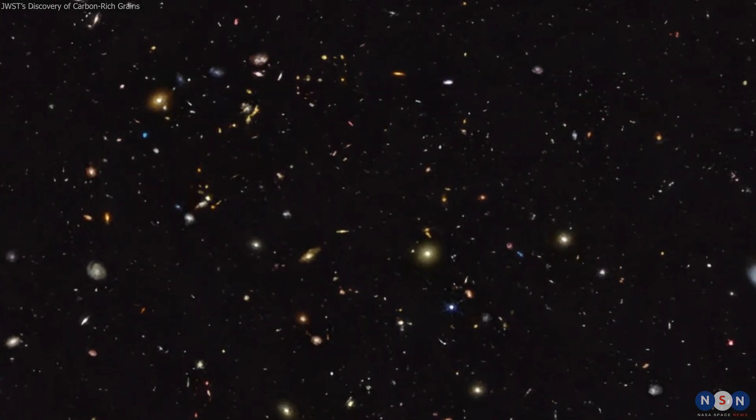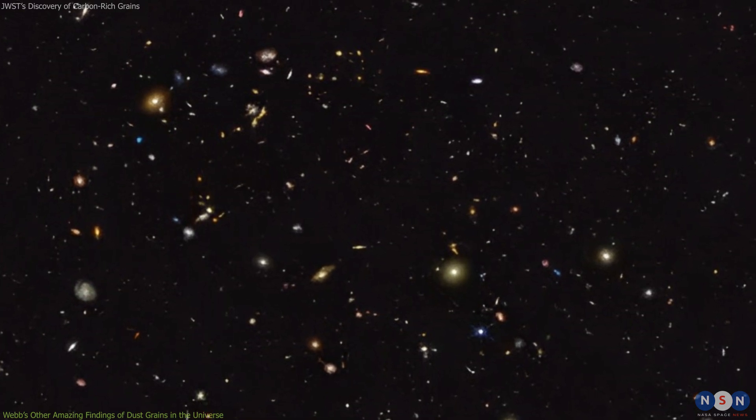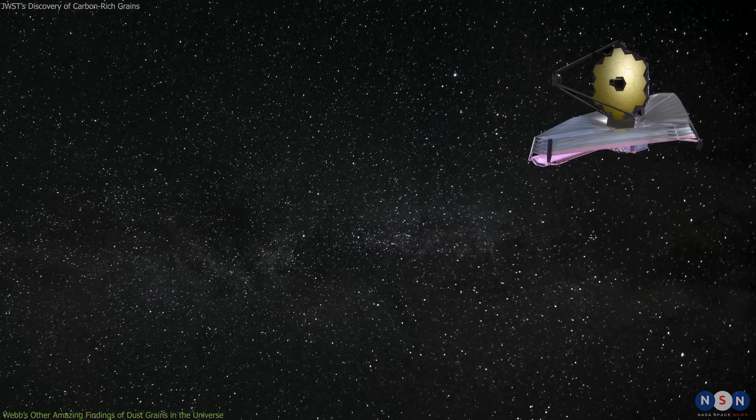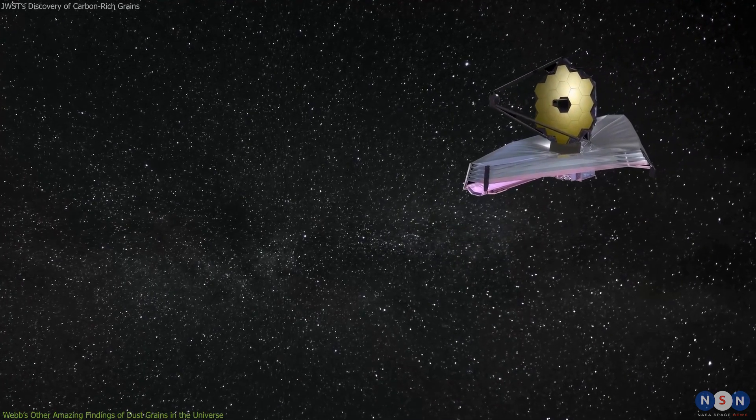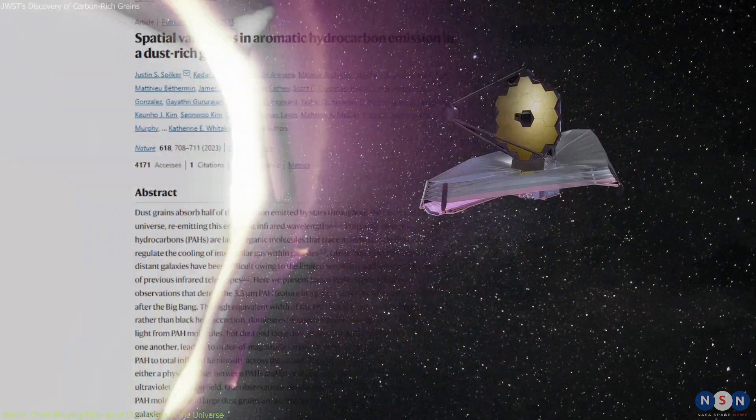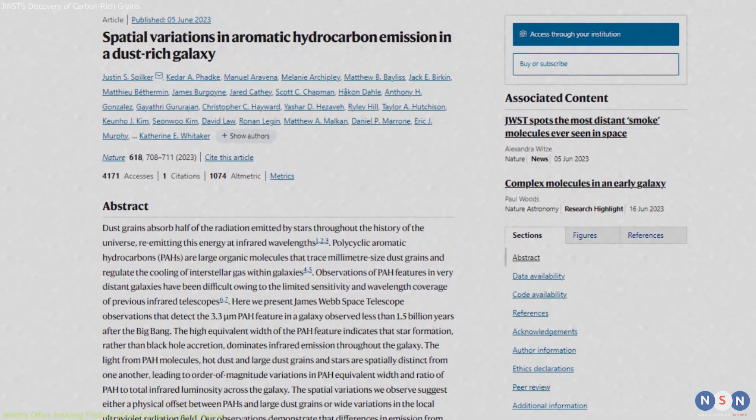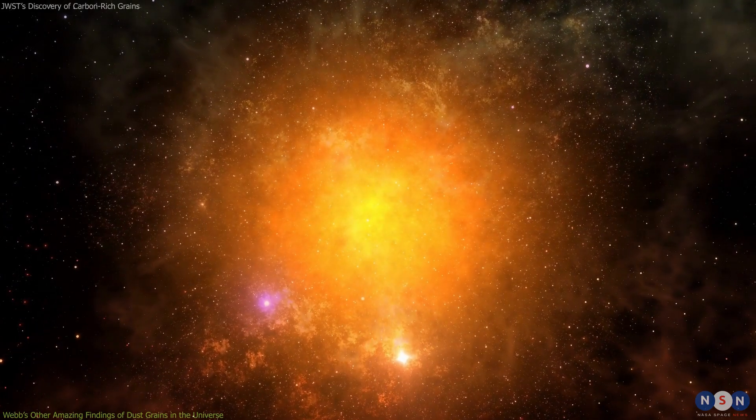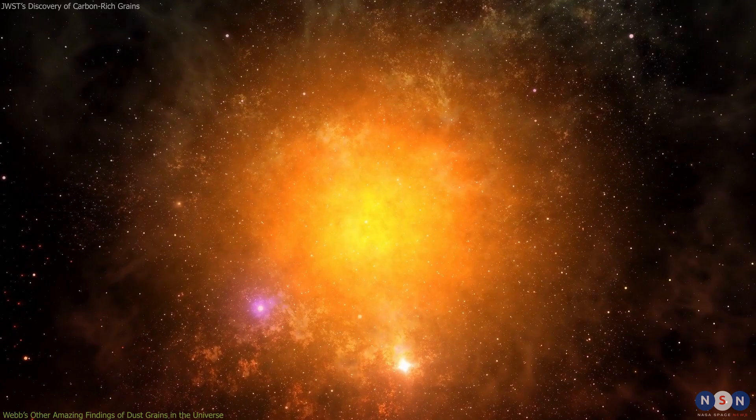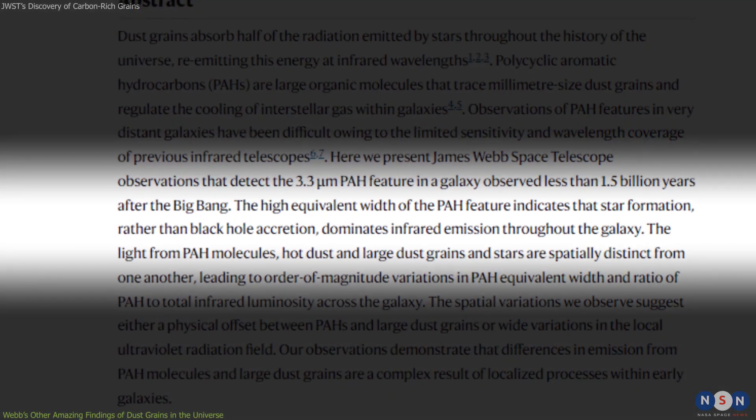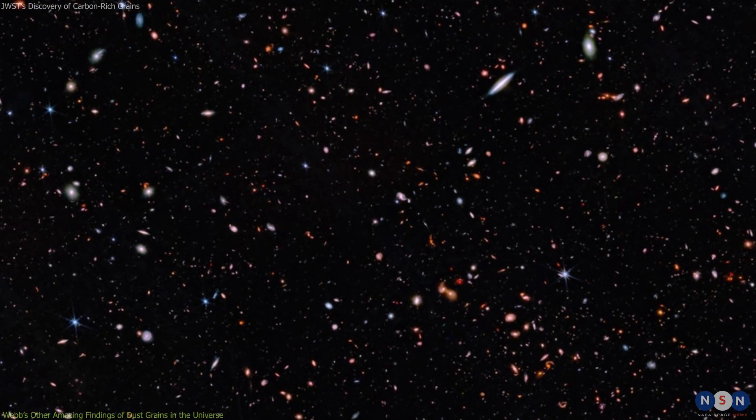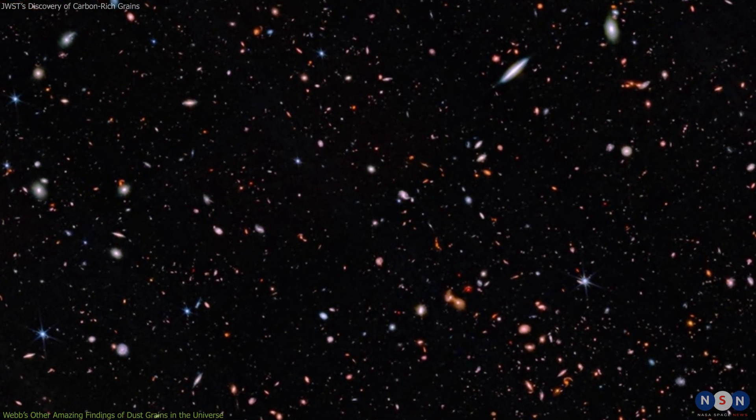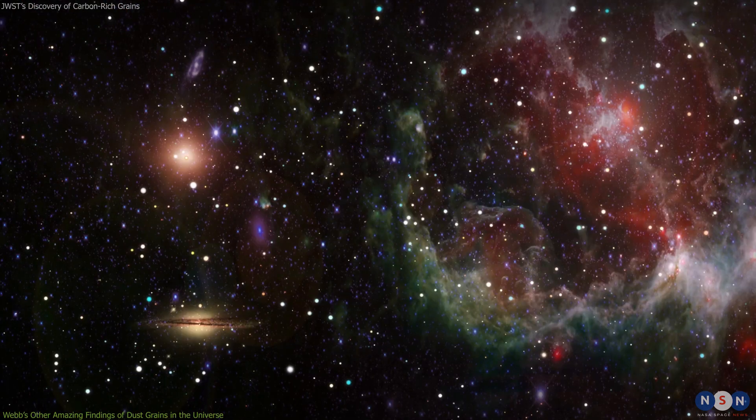JADES-3D1 is not the only galaxy that Webb has found to have unusual dust properties. In fact, Webb has made several other discoveries that reveal the diversity and complexity of dust grains in the universe. In another paper published in Nature, a team of researchers led by Dr. Allison Kirkpatrick from the University of Kansas reported the discovery of spatial variations in PAH emission in a galaxy that formed when the universe was 1.5 billion years old. This galaxy, called JADES-3D2, shows different levels of PAH emission in different regions, which indicates that the dust grains are not uniformly distributed or heated in this galaxy.